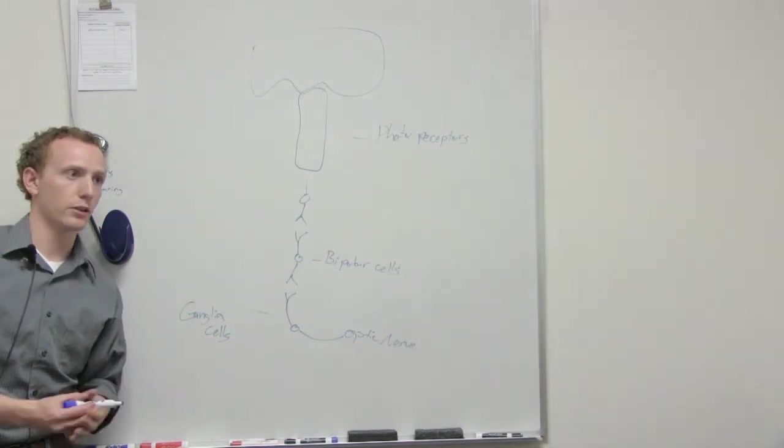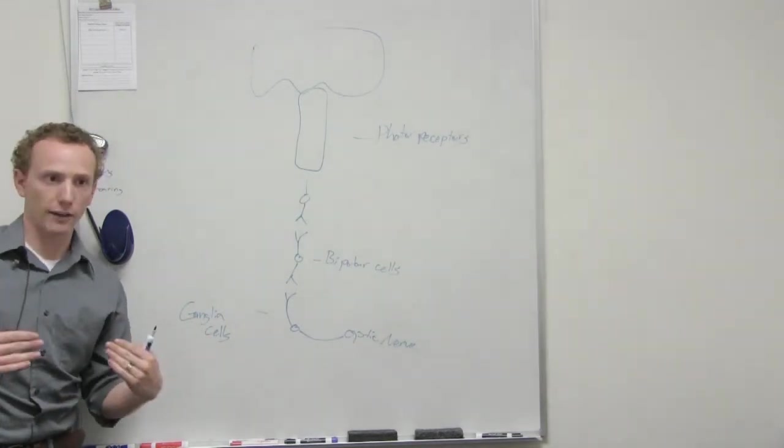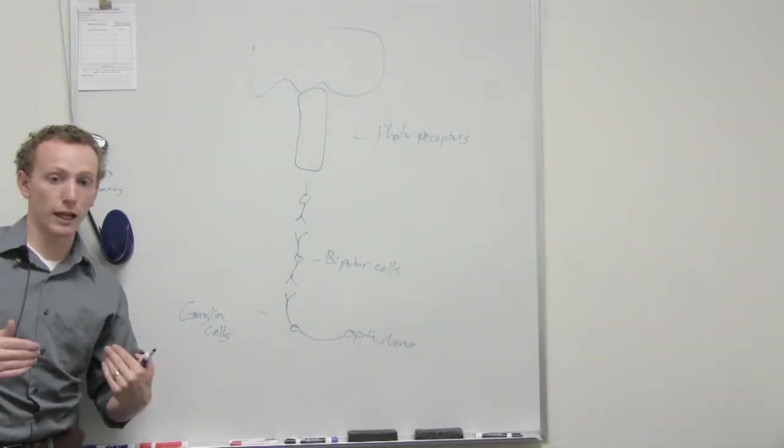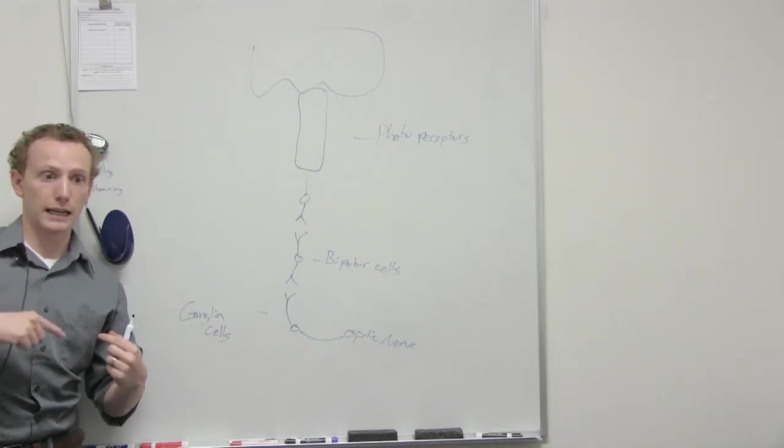Otherwise, like if there's someone who's an albino, they don't have the melanin secretions, can't absorb light, it reflects around in the eye.